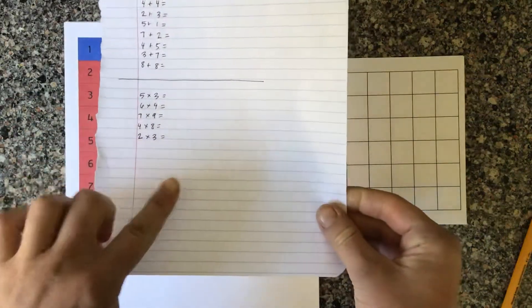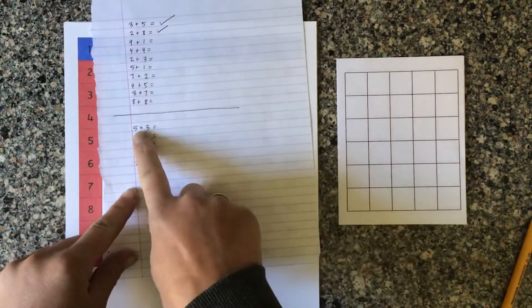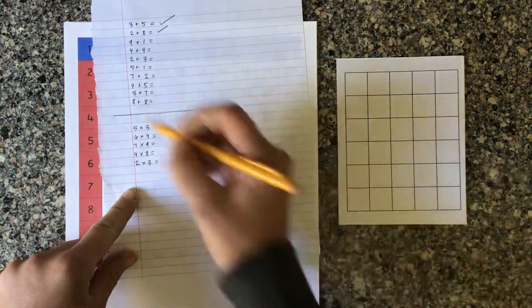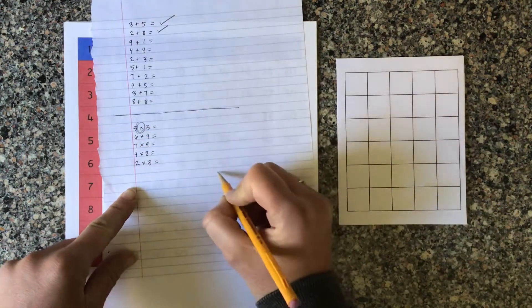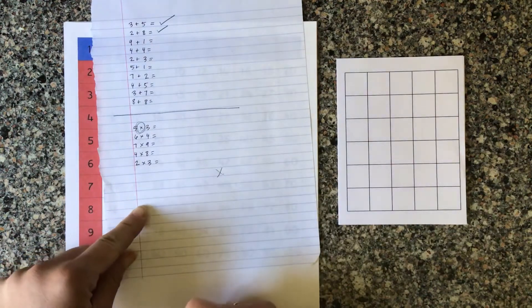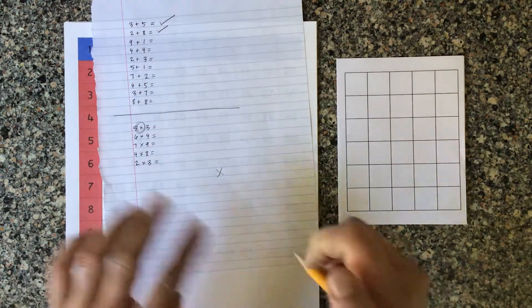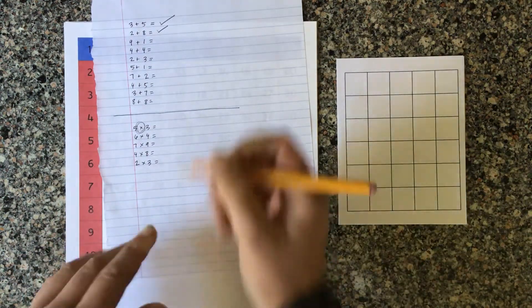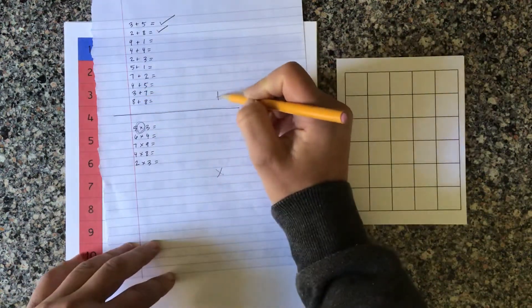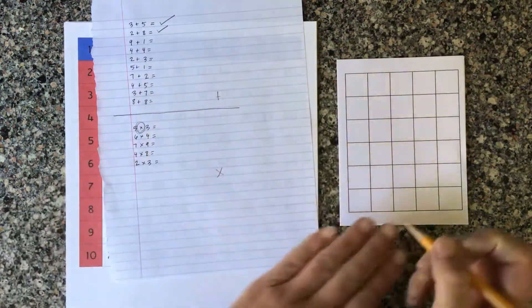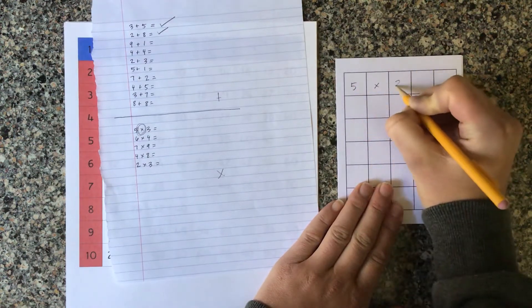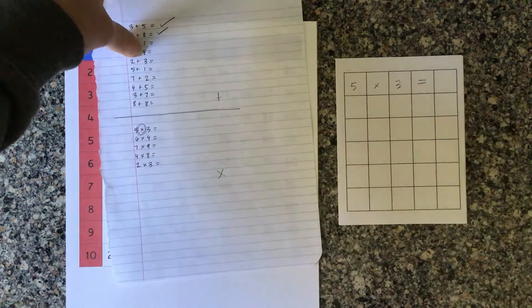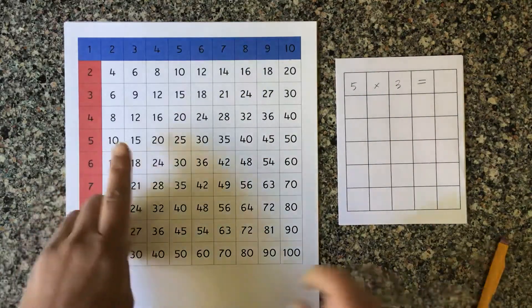So I have some multiplication problems written out here. 5 times 3. Make sure they understand the multiplication symbol here and how that means times, whereas the addition symbol means plus. So you can go over that. 5 times 3 equals.